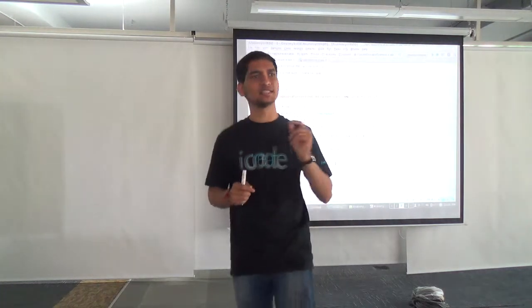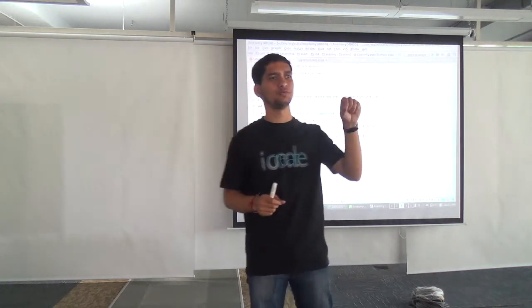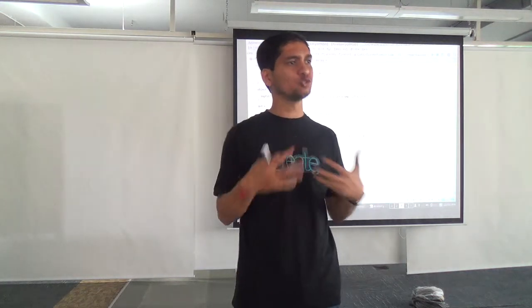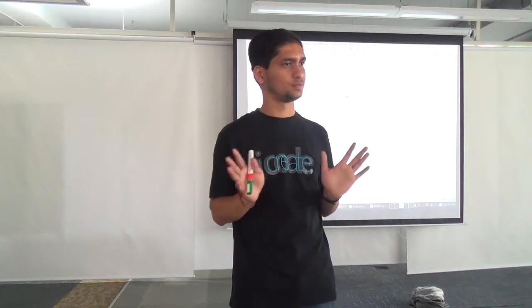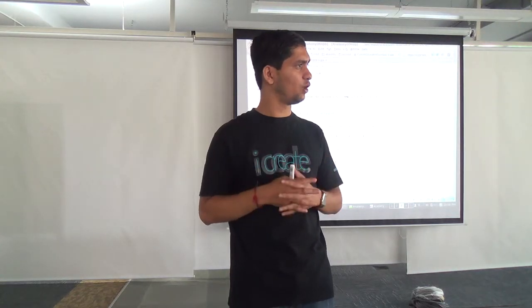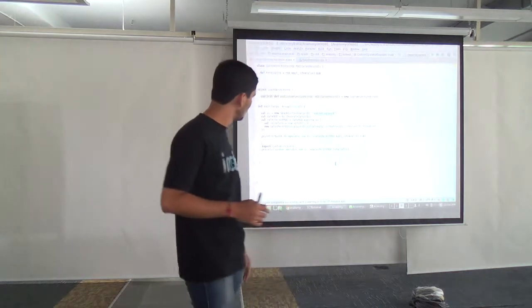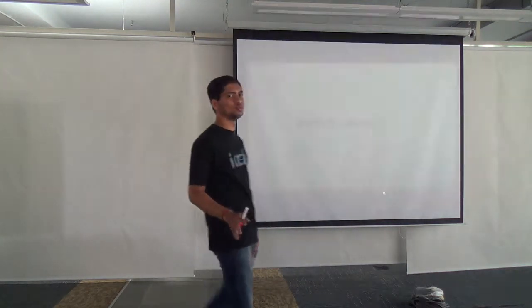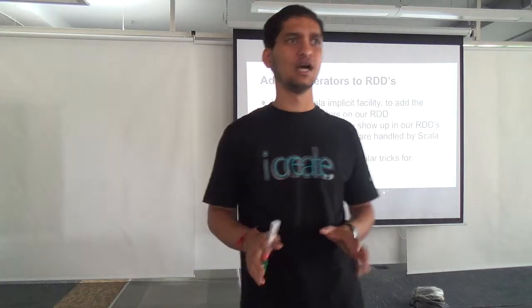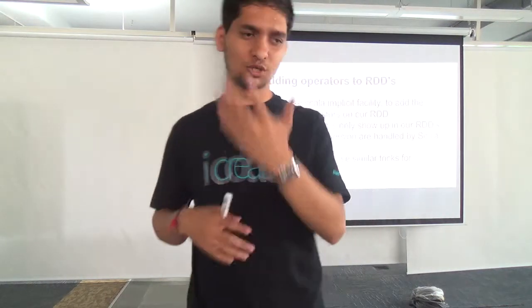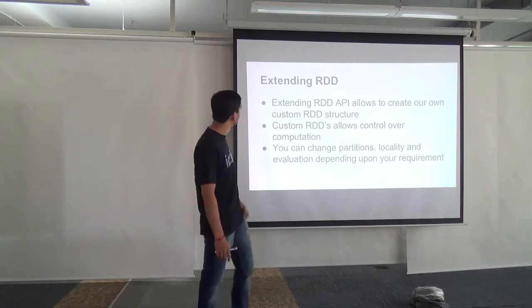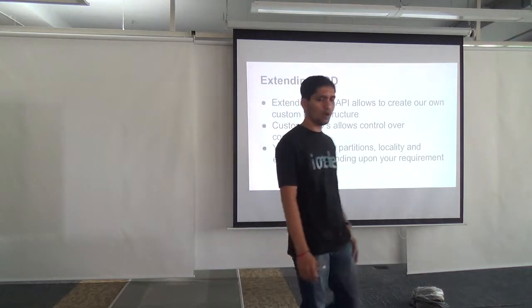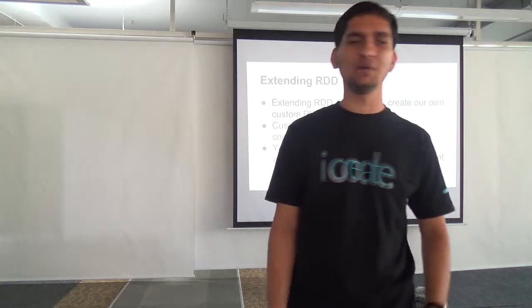So the idea is: we added a custom operator to a domain-specific RDD, which allows it to be used like a built-in Spark API, rather than having a separate approach. Now the second part is: we want to extend RDDs themselves. Not just add operators, but create our own RDD subclass. When we extend RDD, I can show you how the compute function works — we discussed this earlier. What we want to do is create a discountRDD that calculates discounts.